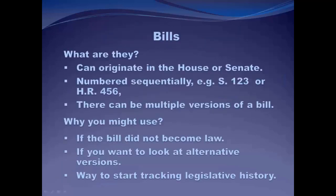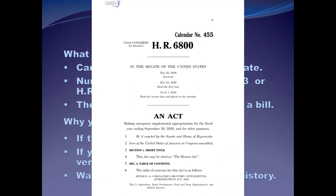First up are bills. For legislative history research, comparing various versions of a bill as it moves through the legislative process may help you determine the intended meaning of the law. After a bill is introduced, it's assigned a bill number, printed, and referred to committee. Bills are frequently amended throughout the legislative process and may be printed several times before finally passed. Arguments regarding the meaning of a statutory section may be drawn based on the inclusion, deletion, or modification of language in the text of the final bill. Here's a bill from the current Congress — that's what it looks like.